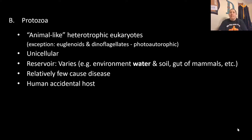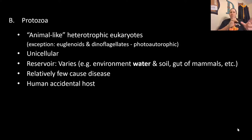Also in Protista are the protozoa. Protozoa are the animal-like heterotrophic eukaryotes — they act kind of like animals but don't have the true characteristics to be classified as animals. Euglenoids and dinoflagellates also do photosynthesis, so they are on the cusp between algae and protozoa. These organisms are unicellular and can be found in environmental water, soil samples, and even the gut of mammals.